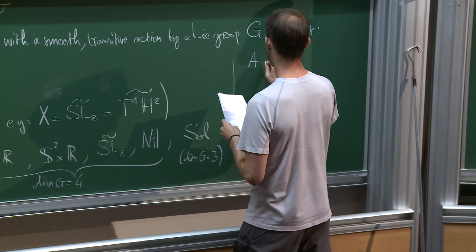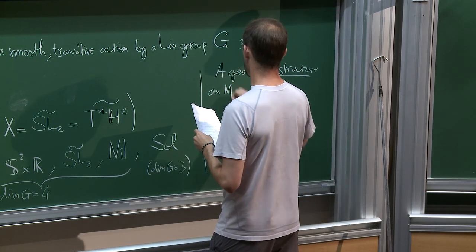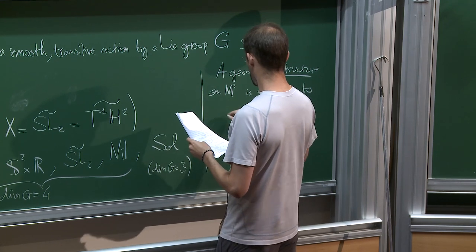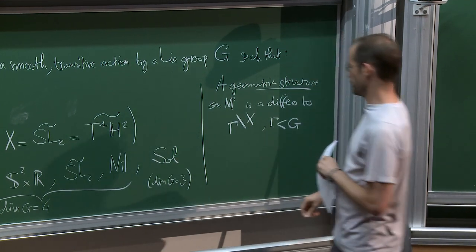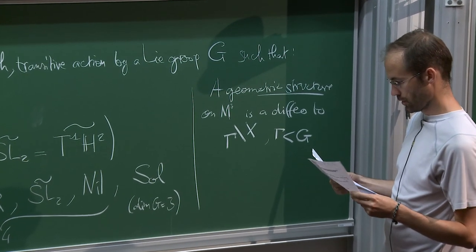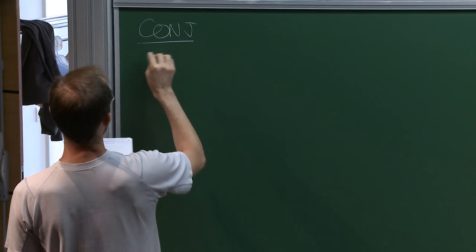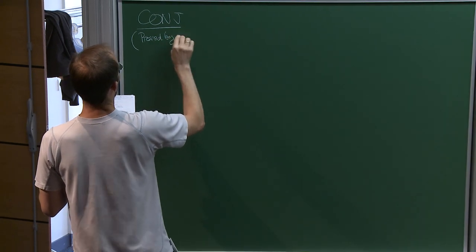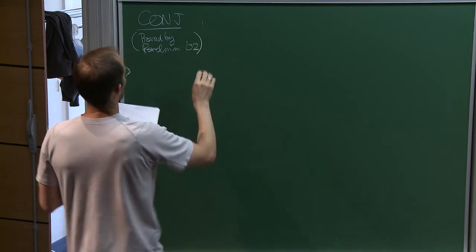So the two that I have not really explained are the last two and there will be pictures and explanations about them at the end of this lecture, if I'm lucky. And also for us a geometric structure on M is a diffeomorphism to a space of the form gamma under X for gamma in one of those G's. So now the conjecture. So this was a conjecture of about 1980 and it was in fact proved as the geometrization theorem by Perelman in about 2002.